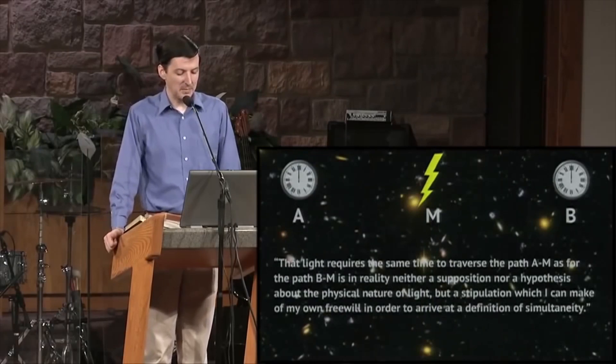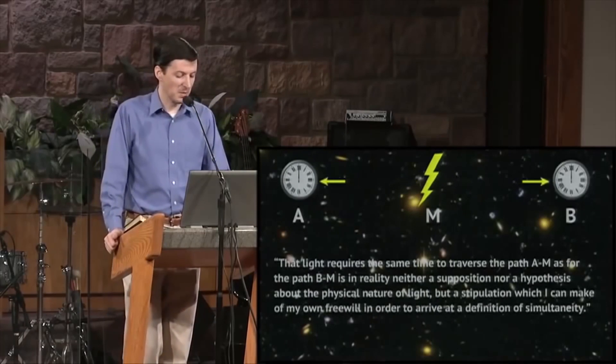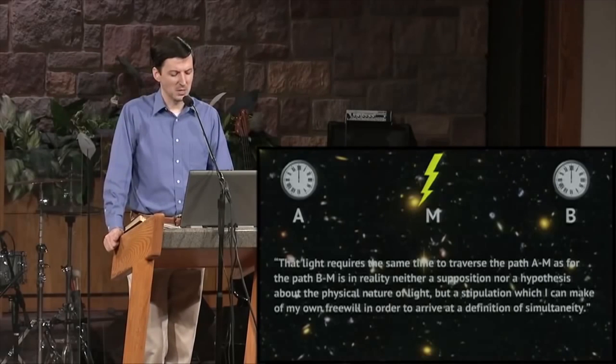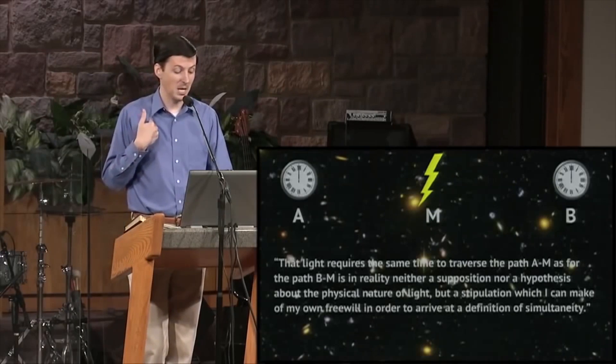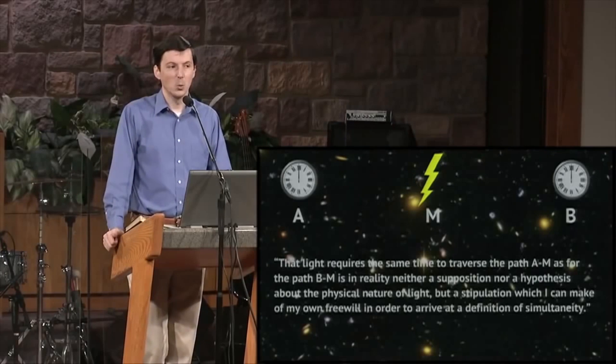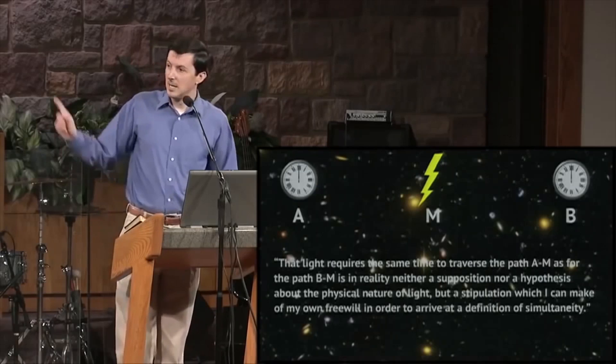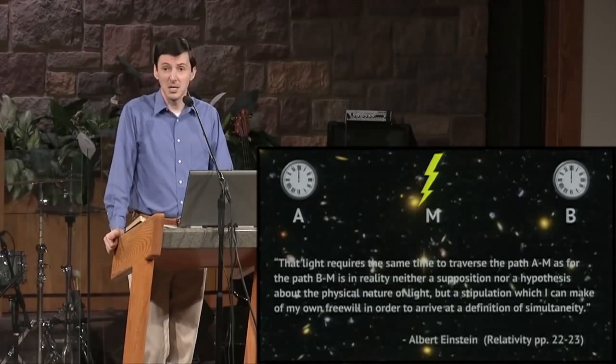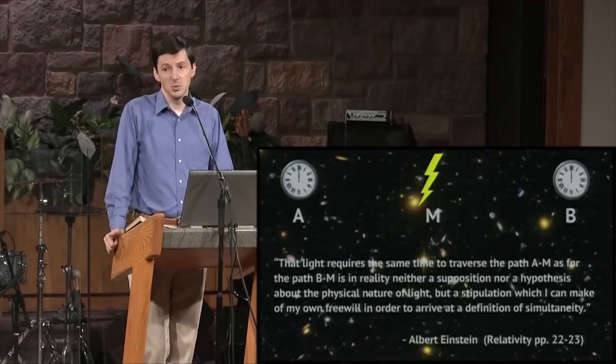That light requires the same time to traverse the path A to M as for the path B to M is, in reality, neither a supposition nor a hypothesis about the physical nature of light, but a stipulation which I can make of my own free will in order to arrive at a definition of simultaneity. We choose the one-way speed of light, and that tells us how to synchronize clocks. And that quote is by Albert Einstein.